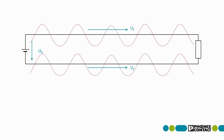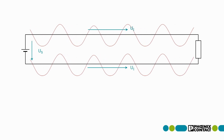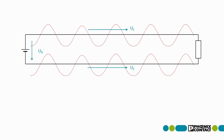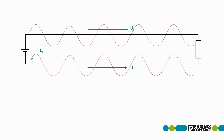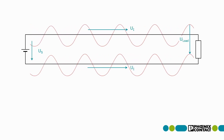The influencing voltage is induced in the forward and return lines with the same magnitude and phase relation. The onload voltage, as a potential difference, therefore does not change.